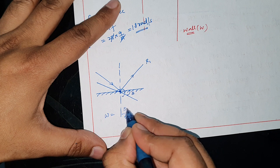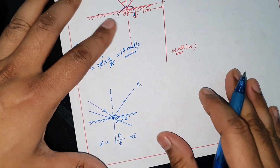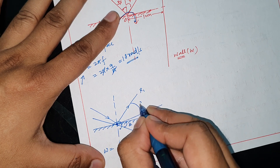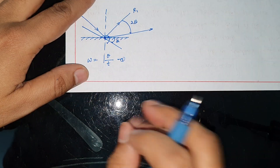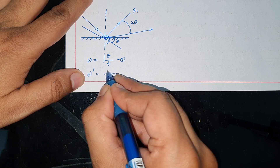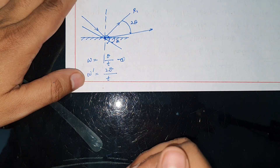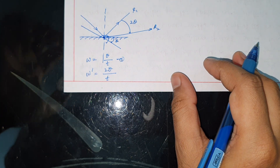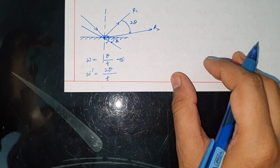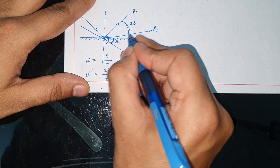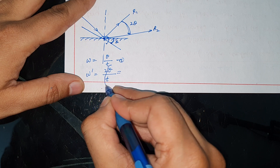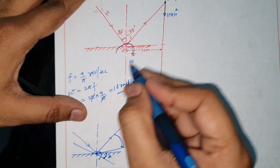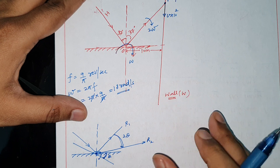In time T, the mirror rotates by angle θ. For the reflected ray, if the mirror rotates by θ, the reflected ray rotates by 2θ in the same time, same direction, same sense of rotation. So the angular speed of the reflected ray is 2ω.